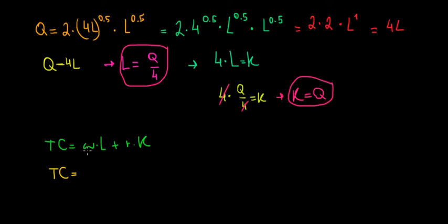The wage was equal to 4, the labor is equal to Q over 4, so we have the expression in terms of quantity. The interest is 1 and the capital was equal to Q. If we cancel out 4 and 4, the total cost function is equal to Q plus Q, which equals 2Q. This is the total cost function.